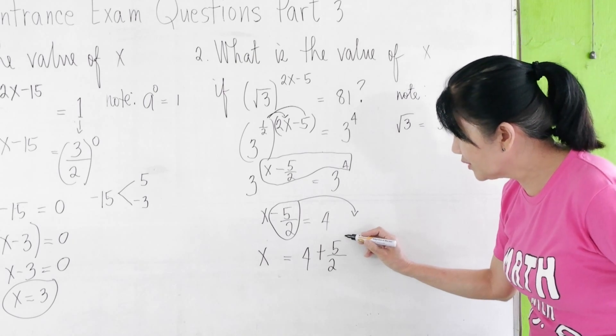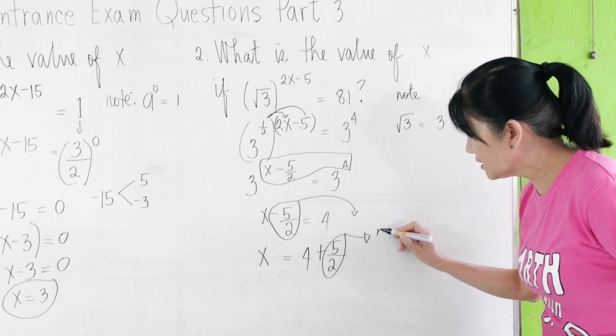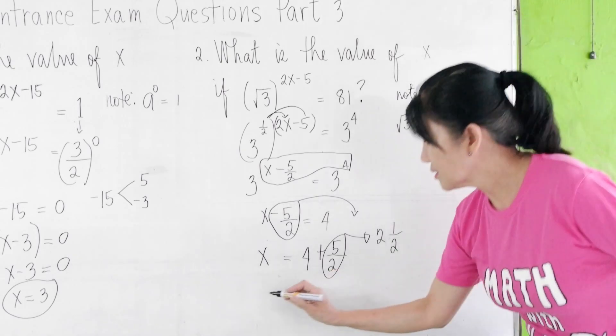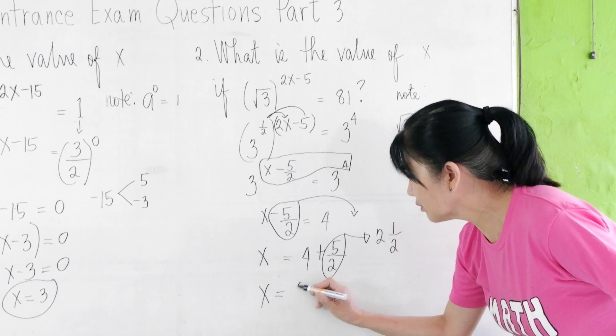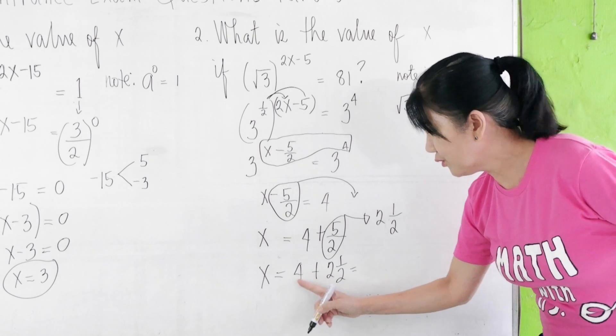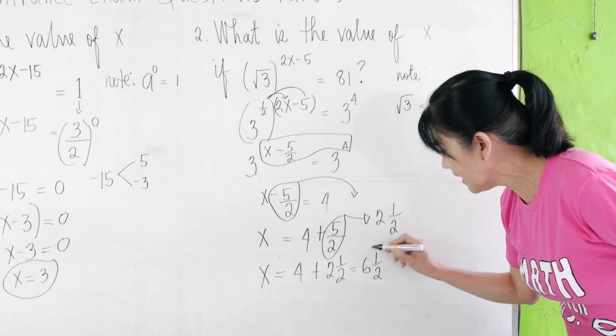But 5/2 here is 2 and a half. So, therefore, x = 4 + 2½ gives us 4 + 2 is 6, plus ½. That is 6½.